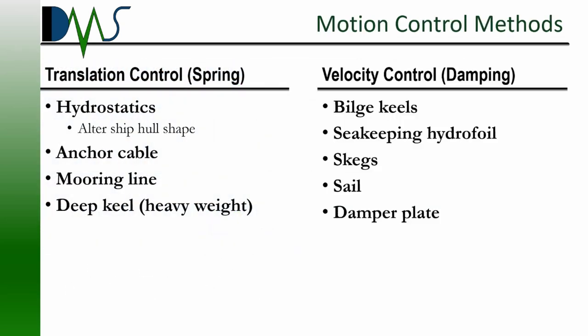If we first look at spring components — what would be considered something that's reacting to translation? First off, hydrostatics. The shape of the ship's hull is the biggest component when we're talking about spring components. So you can alter your ship's hull or you can switch the hull type. Anybody that's been out at sea knows there's a big difference in behavior of a monohull versus a catamaran — that's your hydrostatic component, your spring forces altering your seakeeping.